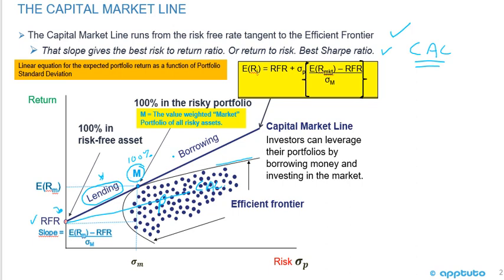Over here on the right-hand side, they call that borrowing because you can borrow money and invest that borrowed money into the market portfolio, creating leverage so you can go out to the right of the market portfolio. For example, if I borrowed money and invested in portfolio T, I would have a higher expected return and higher expected risk than the market portfolio, because I'm using borrowed money.